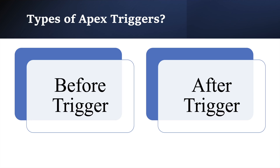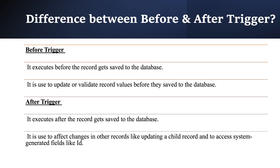There are two types of triggers: Before Trigger and After Trigger. Before Trigger executes before the record gets saved to the database. For example, if we want to update a field value or make any change on a record before it gets saved, we use Before Trigger. After Trigger executes after the record gets saved to the database. For example, if we have a record and want to create a child record, we need the ID of the parent record, which is only available after the record is saved — so we use After Trigger.